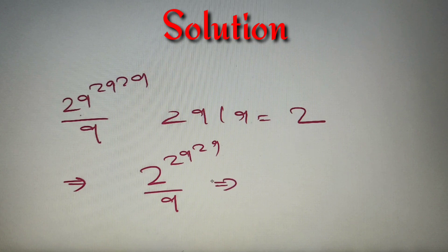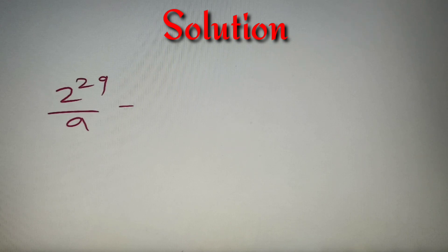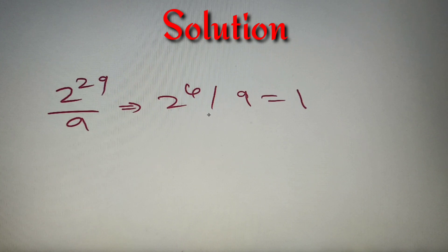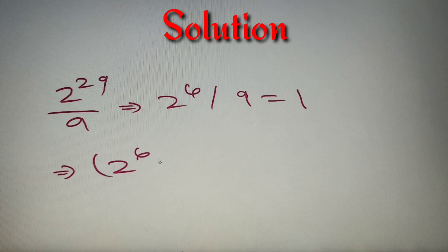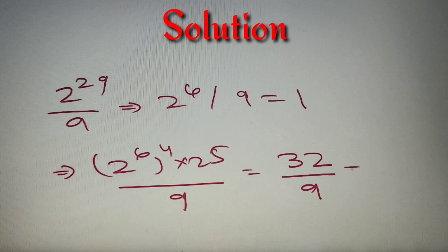If we divide 2 raised to power 29 separately by 9, we get remainder n, and then we just find the remainder of n raised to power 29 when divided by 9. As we know, when 2 raised to power 6 is divided by 9, the remainder is 1, because 2^6 equals 64 and 64 divided by 9 gives remainder 1. So 2^29 can be written as (2^6)^4 multiplied by 2^5. When divided by 9, (2^6)^4 gives remainder 1, and the remaining factor is 2^5 which equals 32. So 32 divided by 9 gives final remainder 5.